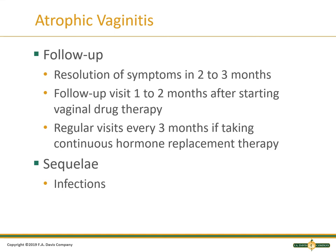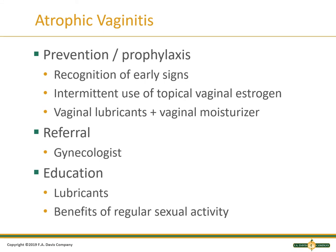If they are on hormone replacement, you need to make sure you're doing regular visits every three months — checking for DVTs, blood clots, pulmonary embolisms. There can also be infections from inserting creams or using lubricants. For prevention and prophylaxis, look for early signs and use intermittent topical vaginal estrogen, lubricants, and moisturizers. Unfortunately, we cannot stop menopause. Referring out to a gynecologist is very helpful. Know what you don't know and refer them out. Educate about lubricants and the benefit of regular sexual activity.